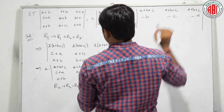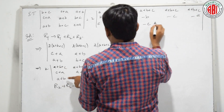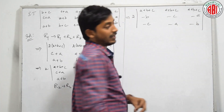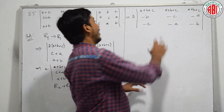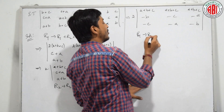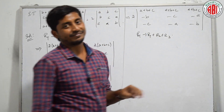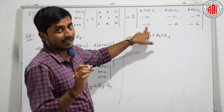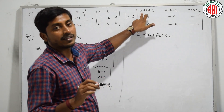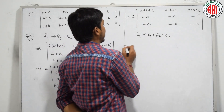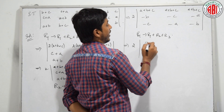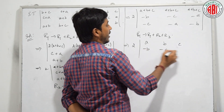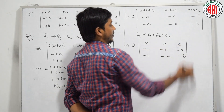Continuing the row operations: B, B and C, C cancel, leaving minus C; A, A and B, B cancel, leaving minus C; B, B and C, C cancel, leaving minus C; C, C and A, A cancel, leaving minus B. Now, applying R1 tends to R1 plus R2 plus R3: A plus B plus C, add minus B, add minus C — B and C cancel, leaving A. Adding gives B here and C here. Taking minus common from row 2 and minus common from row 3.